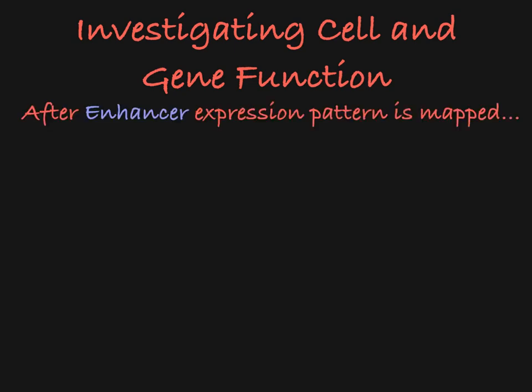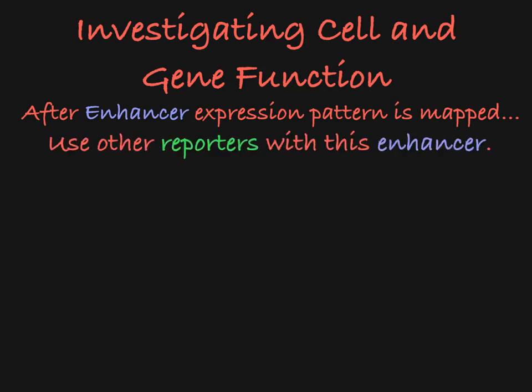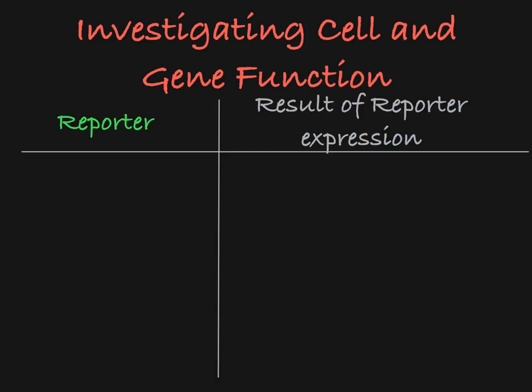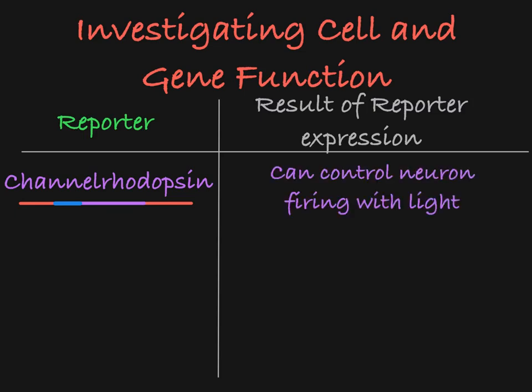Once you know where and when this enhancer is active, you can use a different reporter line to investigate cell and gene function in those specific cells by crossing the driver line with a new reporter line. For example, if you have a driver line that expresses the transactivator in a specific subset of neurons, you can cross this driver line with a reporter line containing channelrhodopsin, which encodes proteins that will control the firing of a neuron when activated by light, allowing you to manipulate neuron activity using light.